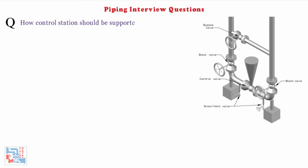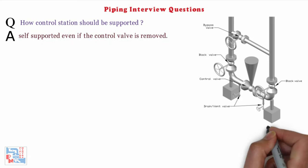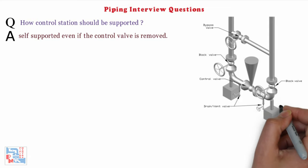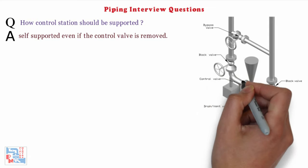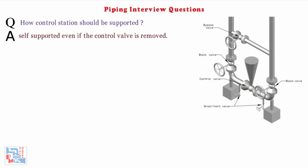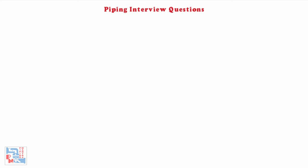Next: how should a control station be supported? It should be supported in such a manner that the control station piping is self-supporting even if the control valve is removed. Normally, control stations are supported on exit side elbows of the bottom run of the control valve.